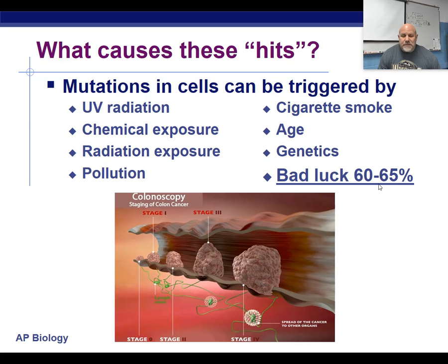Sometimes mutations just happen. It's a random process, and they happen to occur in areas where they cause tumor suppressors to fail or proto-oncogenes to be turned on. More often than not, it's just a coincidental thing that those mutations happen. That's why as you get older and older, the chance of cancer goes up and up, because you have more opportunity for random mistakes to take place.